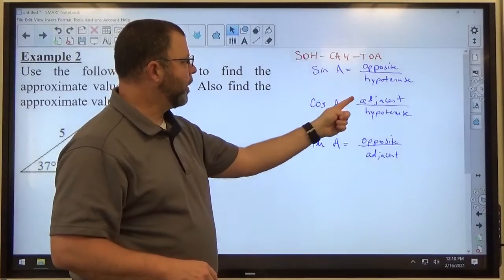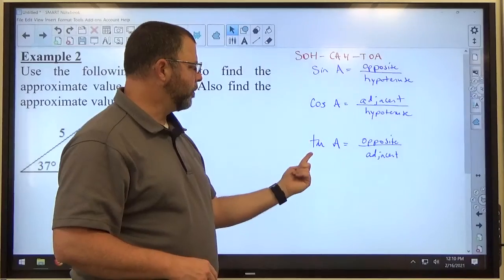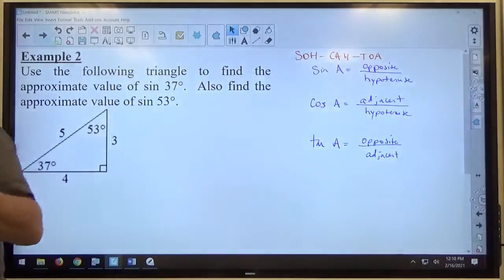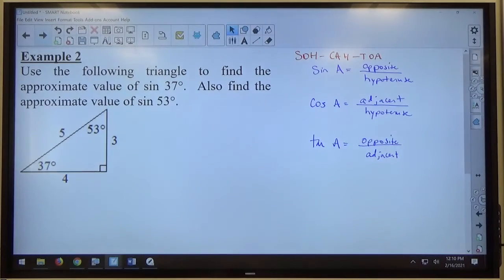C for cosine, A for adjacent, H for hypotenuse. T for tangent, O for opposite, A for adjacent. SOHCAHTOA. And that word helps most people memorize the sine, cosine, tangent ratios.